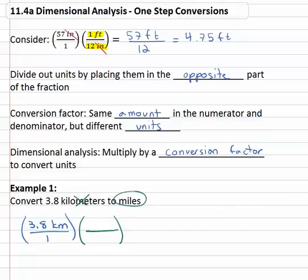Now we don't want kilometers, we want miles. So to divide out the kilometers, we will place them in the opposite part. They're in the numerator, we're going to put them in the denominator and we're going to change them into miles.